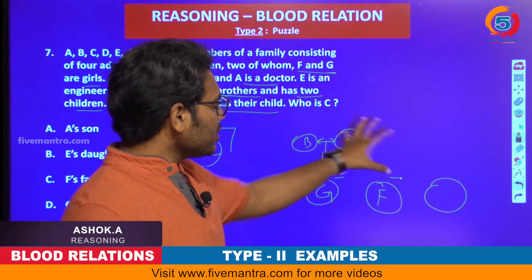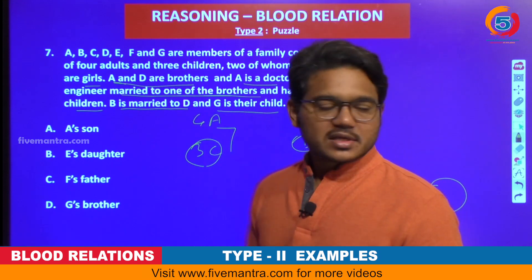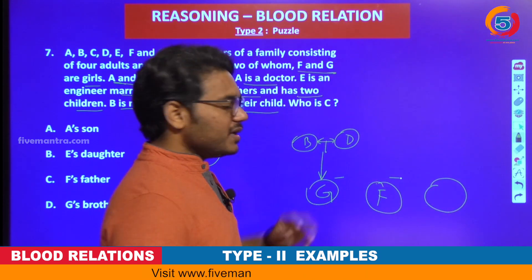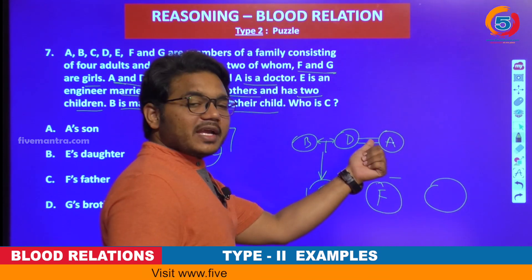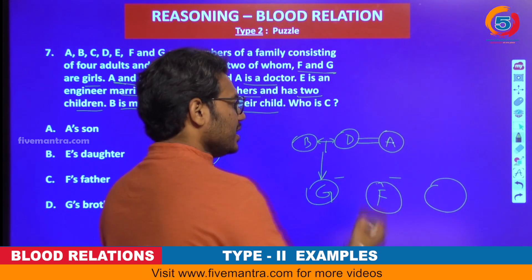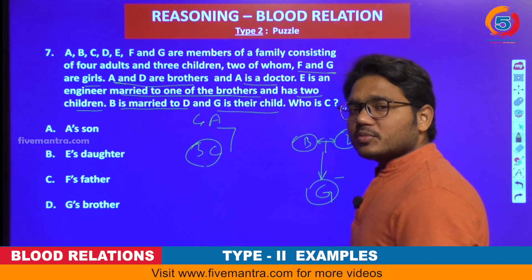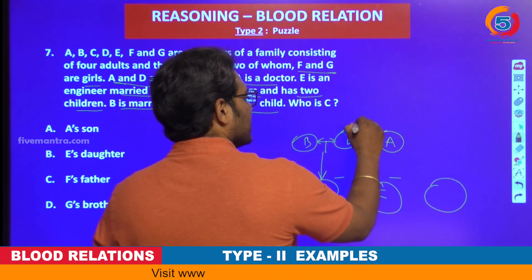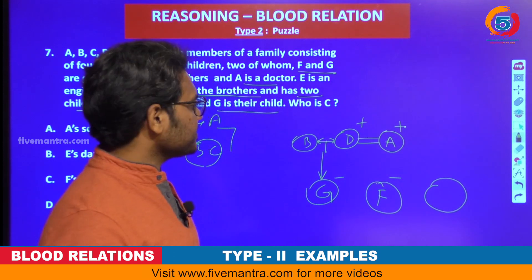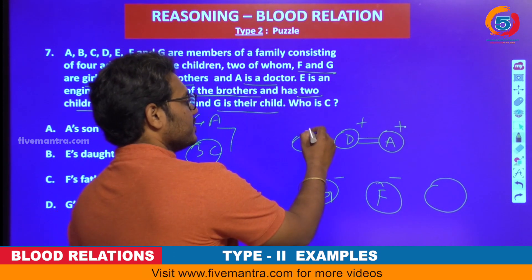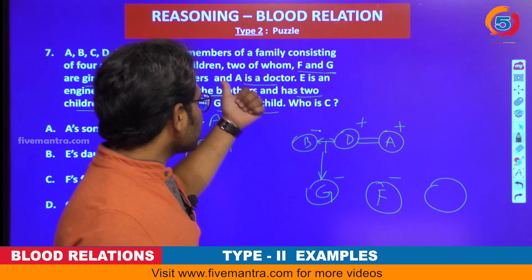A and D are brothers, and A is a doctor. We cannot identify where exactly A is yet. Among these, it is clear that A and D are brothers — D is already located. So A can be placed as a sibling to D. Both are males. Since D is male, B will become female.